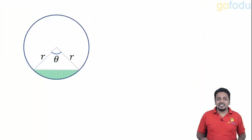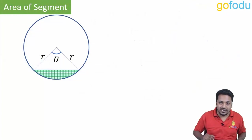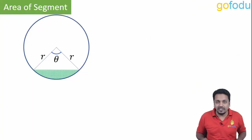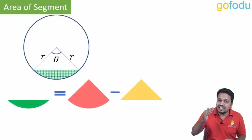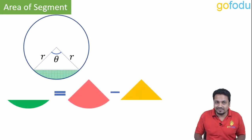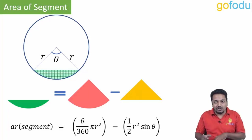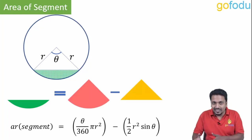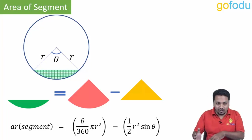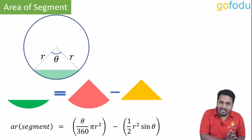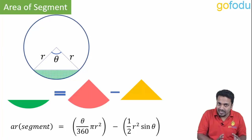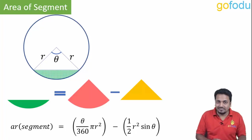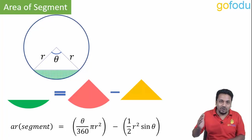Last but not the least, area of segment. The shaded one is a segment and its area equals the area of the sector minus the area of the triangle. So the area of segment equals (theta upon 360 times Pi r squared) minus (half r squared sin theta). The two radii form the two sides of the triangle and the angle between them is theta.